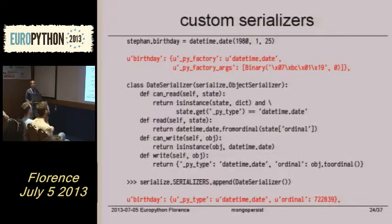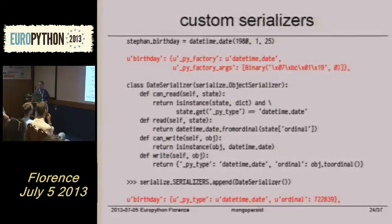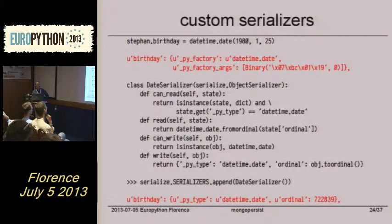In the date serializer we have four methods. Two of them decide whether this serializer is valid for the given data type — can_read or can_write — and read and write itself does the real conversion. You just need to register those serializers in serializer.serializers, and on the next write with ordinal, you get a nice number which you can then compare and query. Much more easier.